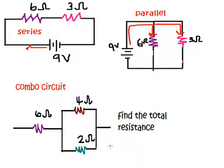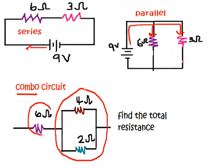But what happens if you need to find the total resistance of what I call a combo circuit when you have a parallel section and a series section? So how do you do something like that? That's what this tutorial is all about.